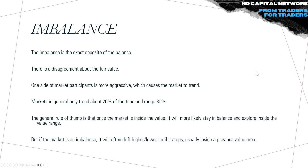Imbalance is the exact opposite of balance — it is a disagreement about fair value. This happens only about 20 percent of the time. The general rule of thumb is that once the market is inside the value area it will more likely stay in balance and explore the inside of the value range. Simply put, one side of market participants is more aggressive, which causes the market to be trending.